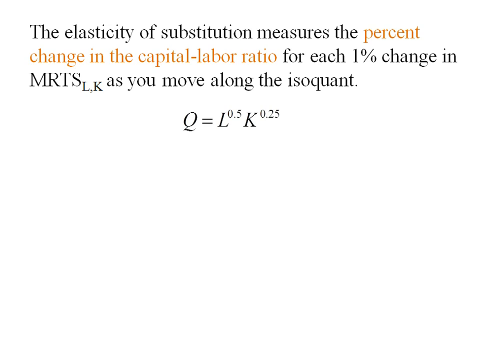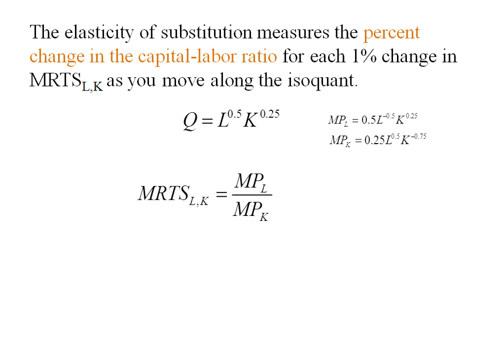This is the production function that gives us the isoquant from the preceding slides. The marginal rate of technical substitution will be the ratio of the marginal product of labor to the marginal product of capital. Going back to this original production function I can find the MPL and the MPK, plug them in, and it simplifies nicely because it's a Cobb-Douglas. Our marginal rate of technical substitution is 2K over L.